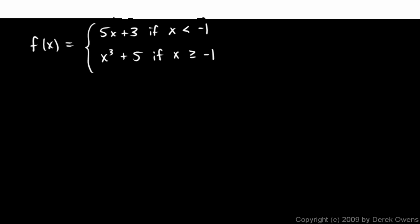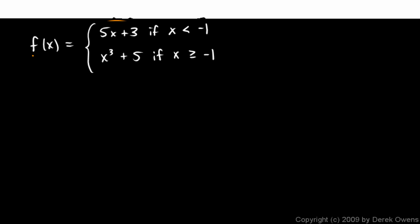Let's look at some examples. This first one is f(x) = 5x + 3. This is a line, and the y value will be computed with this expression if x is less than negative 1. And f(x) = x³ + 5 — we compute the y value with this expression if x is greater than or equal to negative 1.